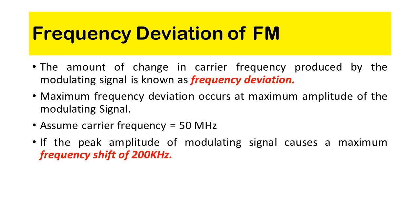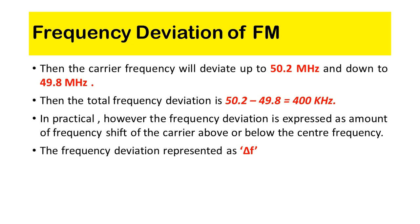Assume the carrier frequency equals 50 megahertz. If the peak amplitude of the modulating signal causes a maximum frequency shift of 200 kilohertz, then the carrier frequency will deviate up to 50.2 megahertz and down to 49.8 megahertz. The total frequency deviation is 50.2 minus 49.8, which equals 400 kilohertz.